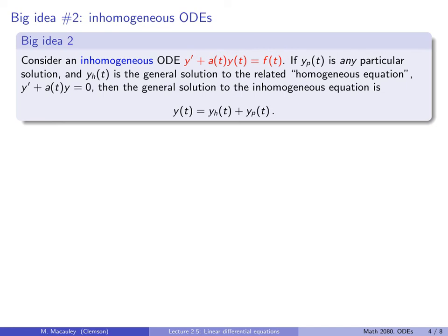Big idea number one was about solutions to homogeneous linear equations — you can think of it as superposition. Now, big idea number two is about solutions to inhomogeneous differential equations. Suppose we have a first-order inhomogeneous linear equation like this.